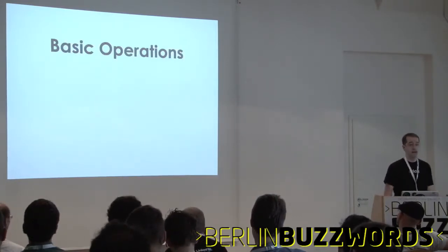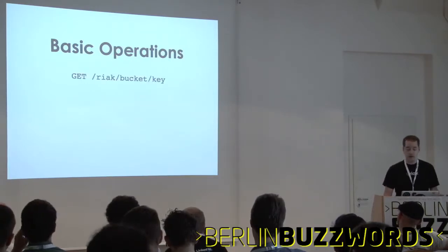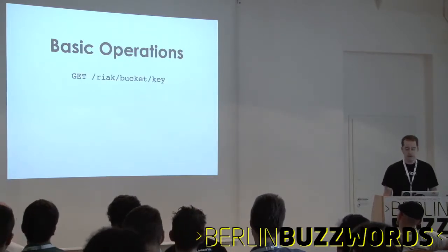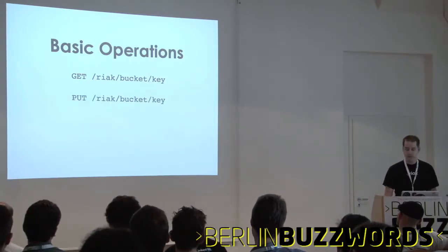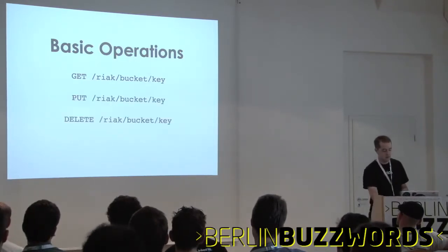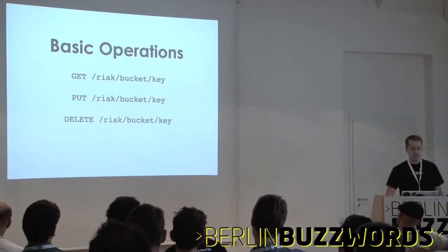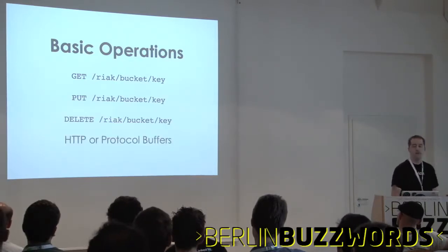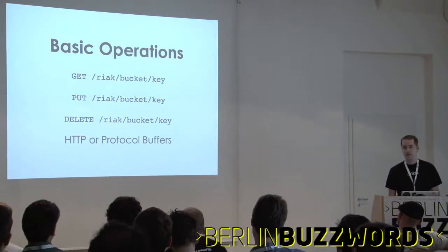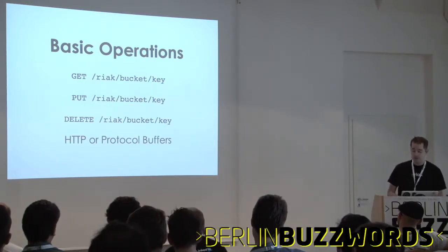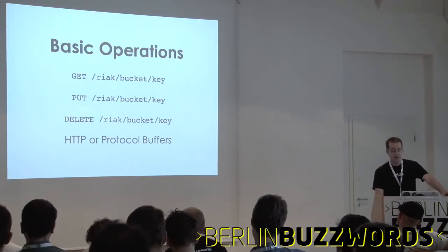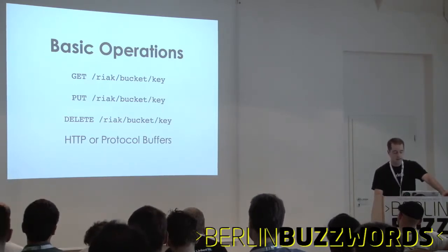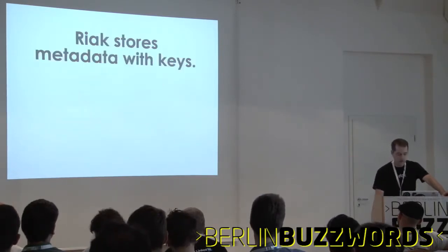Being a key-value store, Riak has some basic operations: GET to fetch a key — here's how it looks over HTTP — PUT to store a value under a key, and DELETE. We also have a binary interface that uses Google's Protocol Buffers for serialization only; it doesn't use Protocol Buffers RPC. Pretty simple operations.